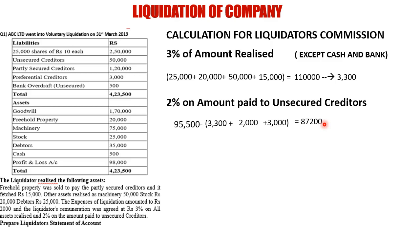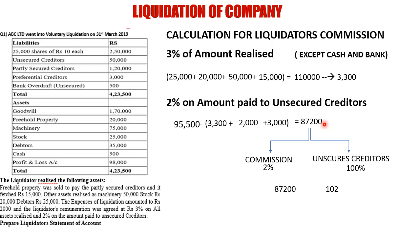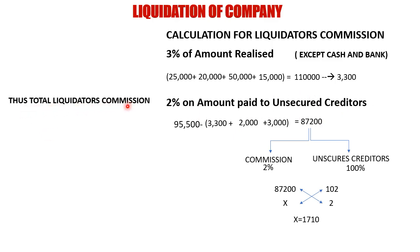From Rs. 87,200 we must pay both the liquidator's commission (2%) and the unsecured creditors (100%). Assuming unsecured creditors = 100, the commission = 2, so the total = 102. Therefore Rs. 87,200 represents 102%. To find 2% (commission): x = (87,200 × 2) / 102 = Rs. 1,710. Total liquidator's commission = Rs. 3,300 + Rs. 1,710 = Rs. 5,010.